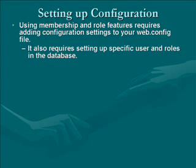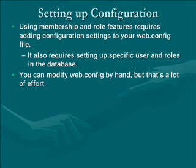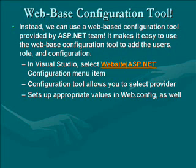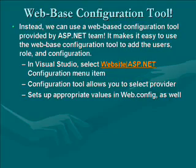Using Membership and Role features requires adding configuration settings to your web.config file and setting up specific users and roles in the database. You could do this by hand — modify web.config, go to your database and add users — but that's a lot of effort. Instead, we'll use a web-based configuration tool provided by the ASP.NET team. This makes it easy to add users, roles, and membership information without having to modify web.config or databases yourself. In Visual Studio .NET, just select the appropriate menu item and it brings up the tool. This configuration tool allows you to select the provider and sets up appropriate values in web.config as well. Let's look at this tool and see how it works.